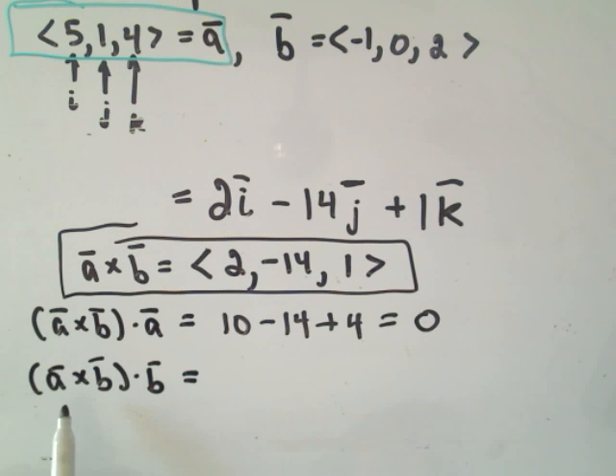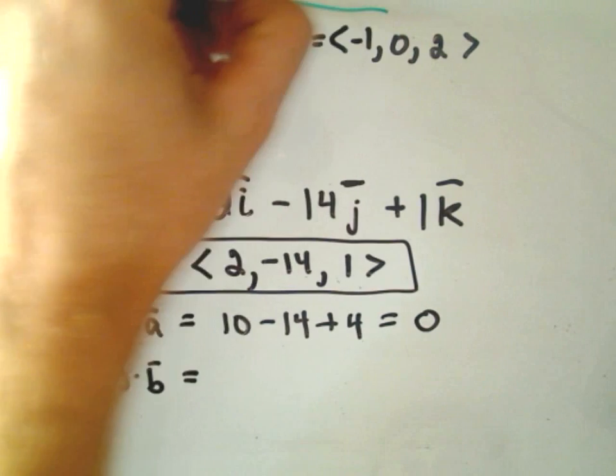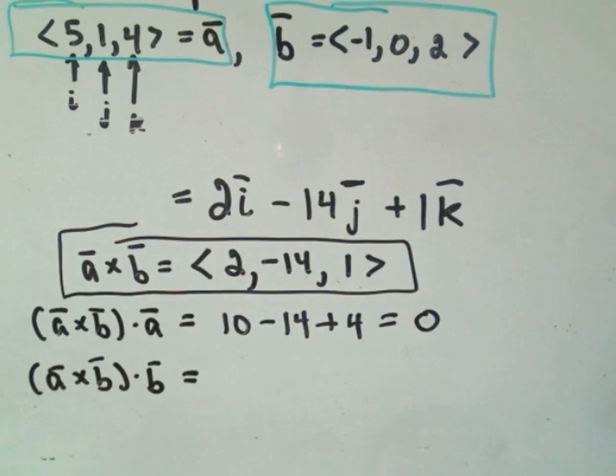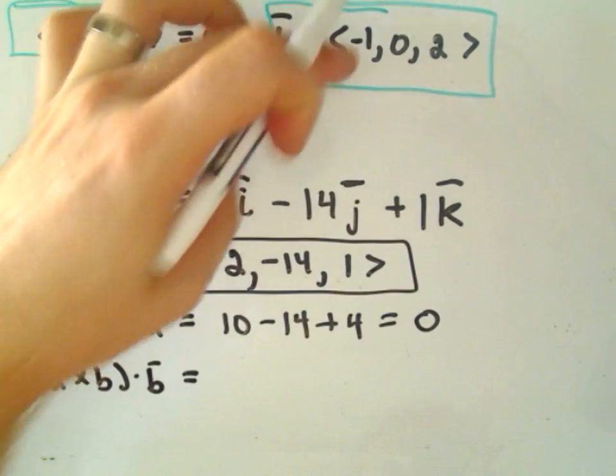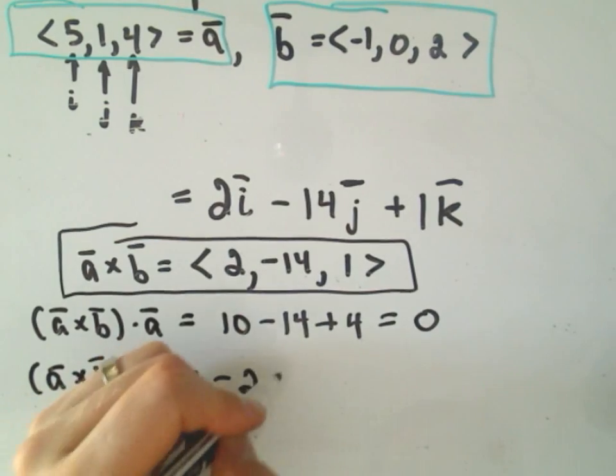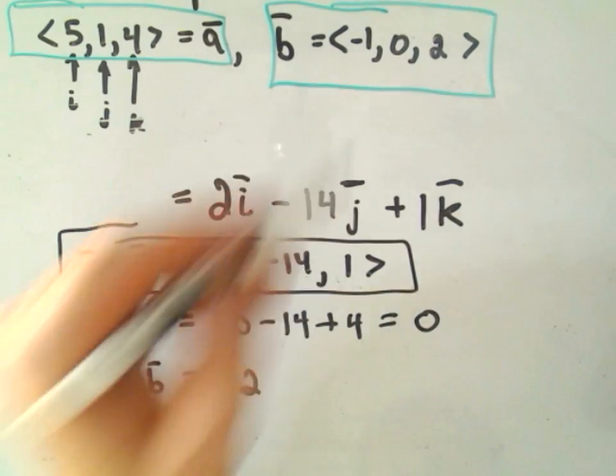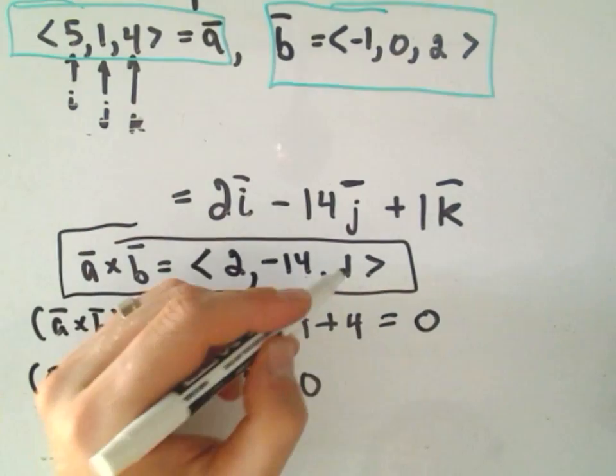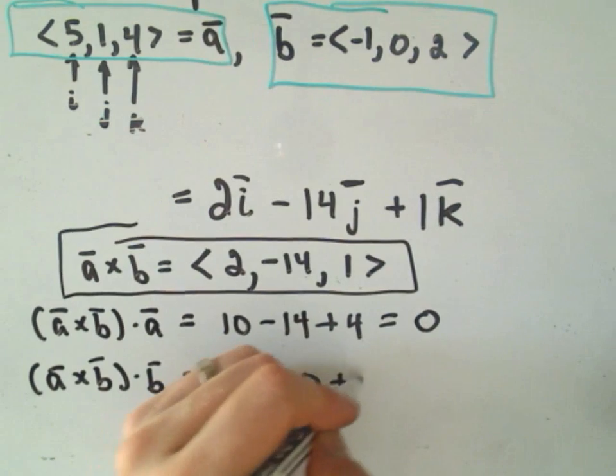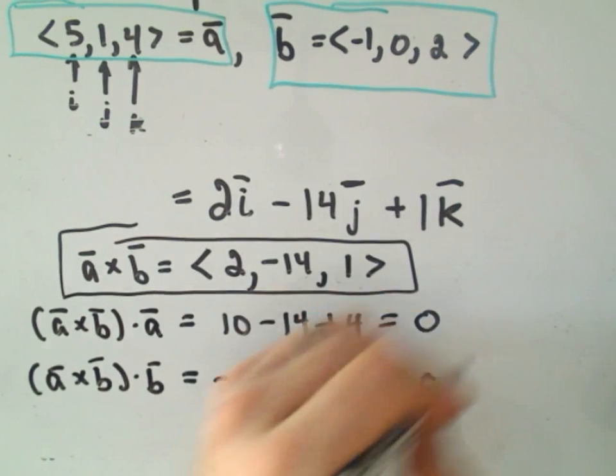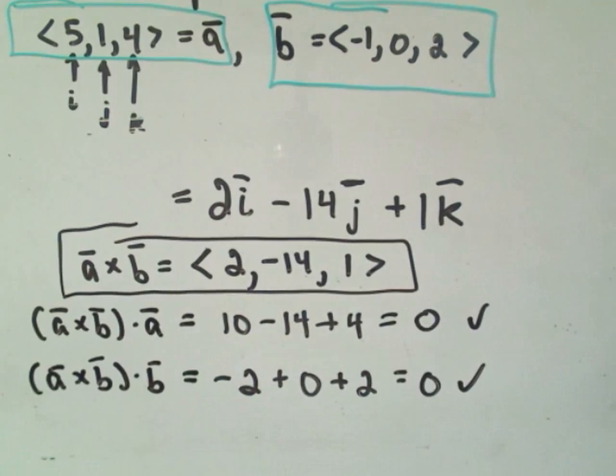And then we can do the same thing. We can take the dot product of the cross product with vector B. So now I'm just multiplying and adding respective components. So it says 2 times negative 1 will be negative 2. It looks like we get negative 14 times 0, so plus 0. And then we'll get a positive 1 times a 2, which again is a 0. So hey, that means our cross product is orthogonal to both vectors. And to me that's a pretty good indication that I did the computations correct.